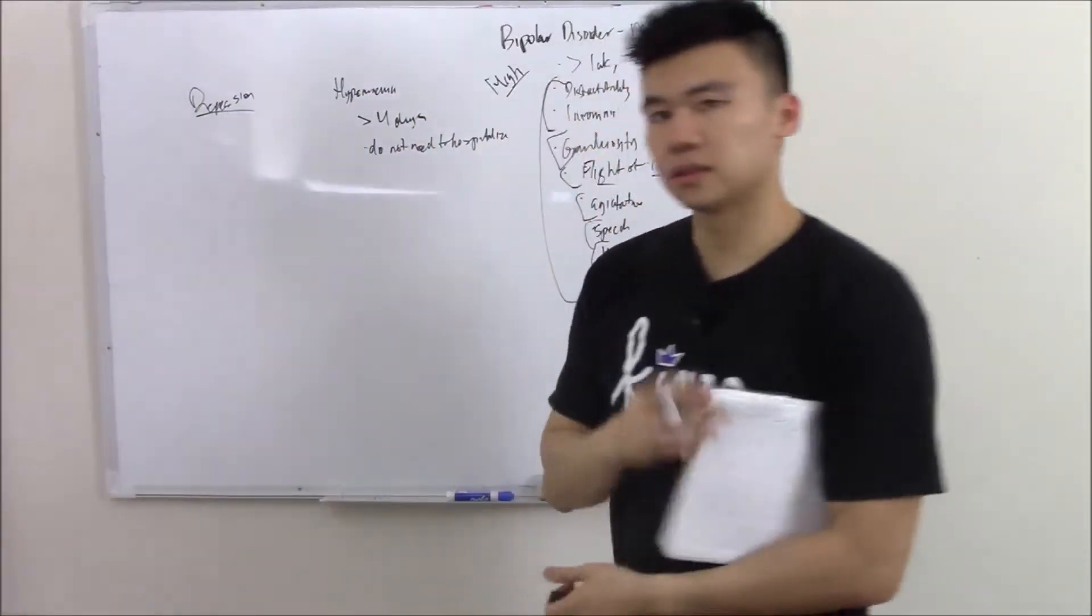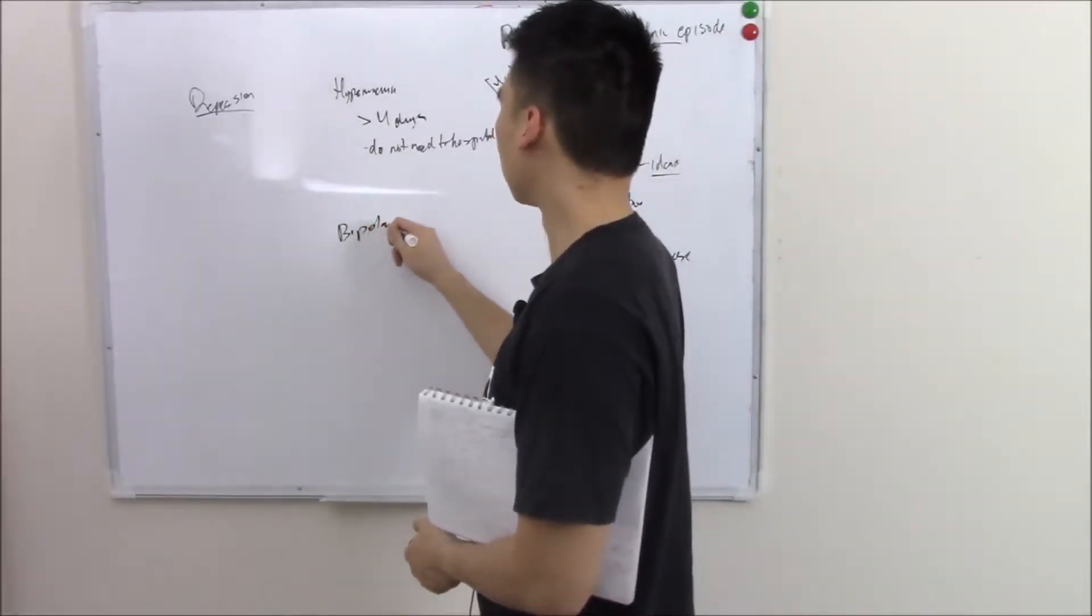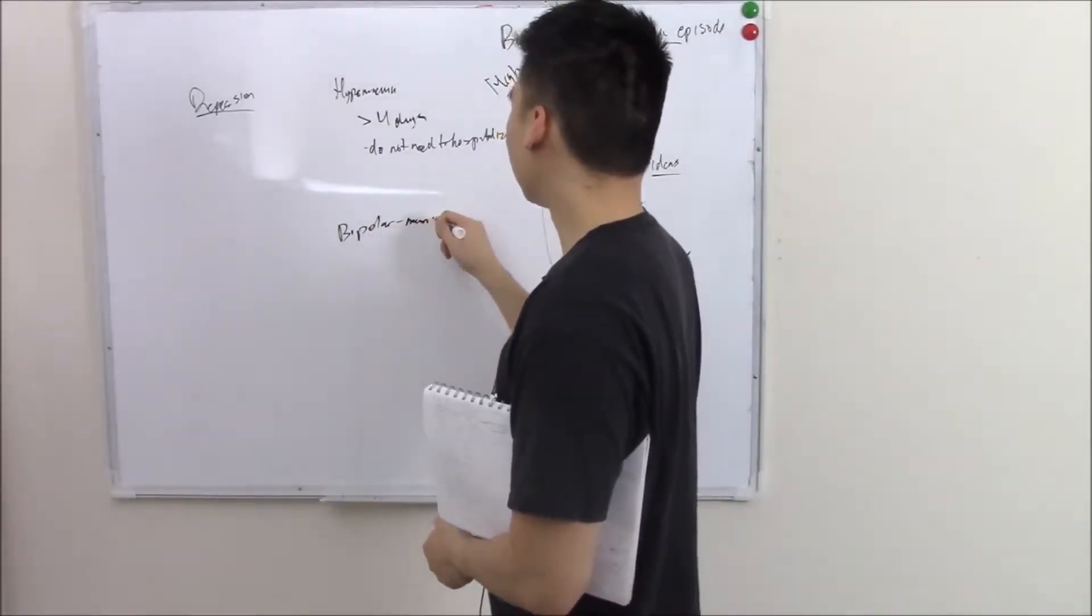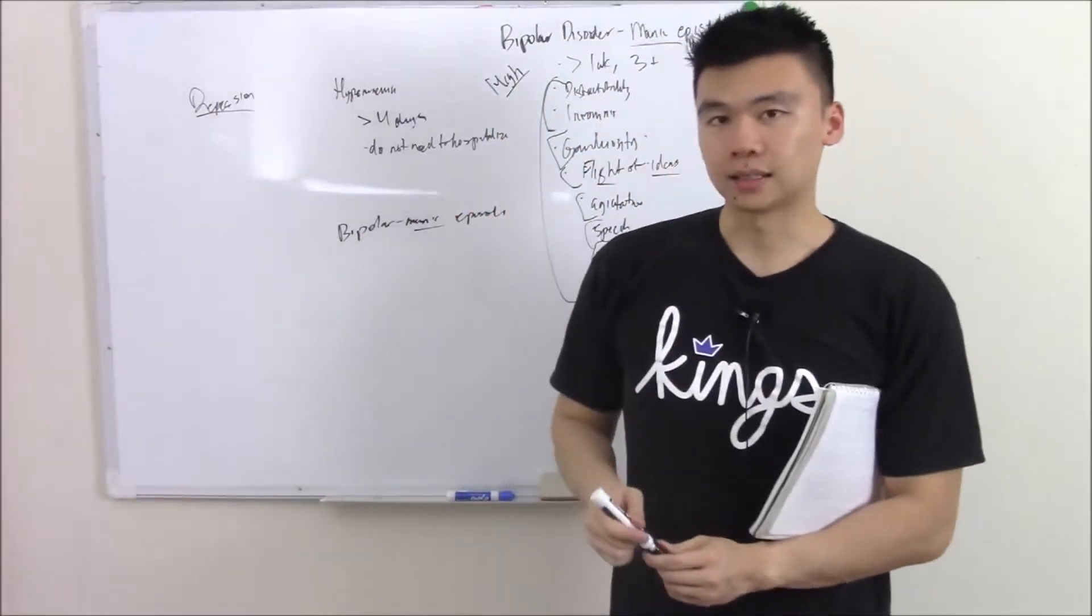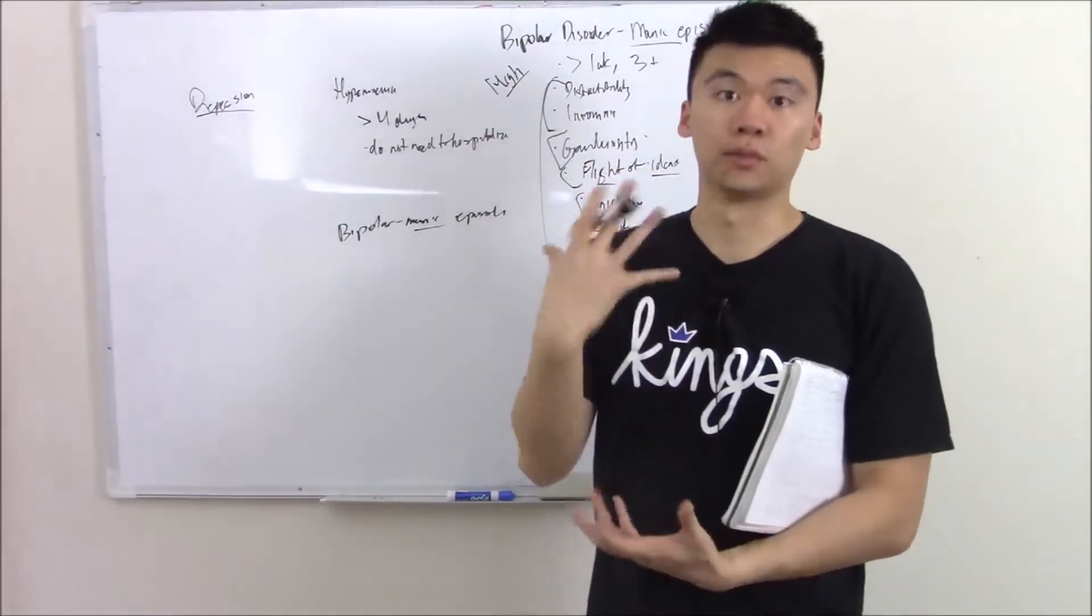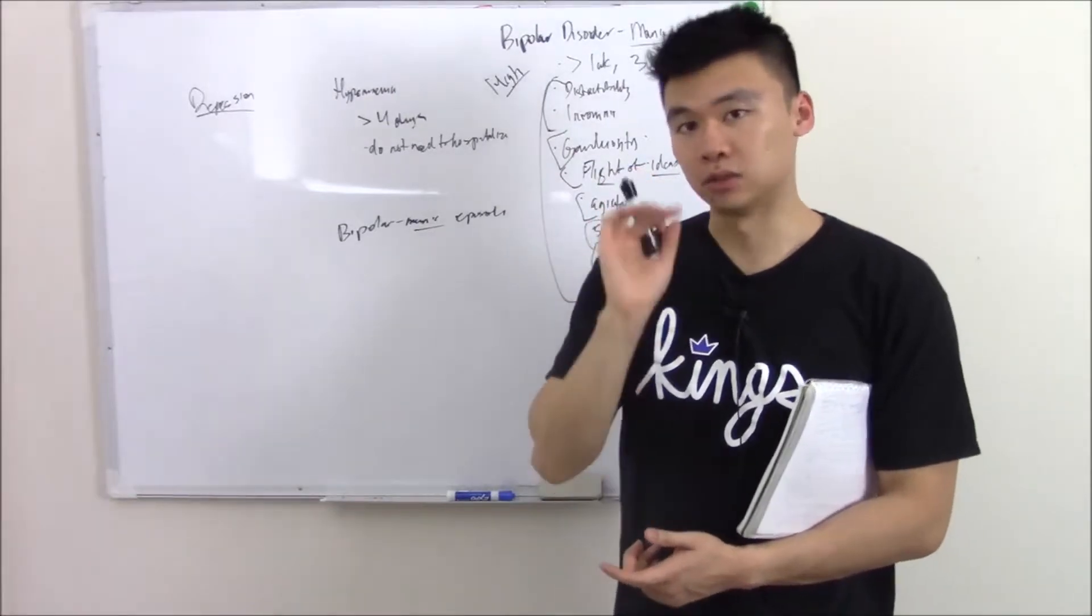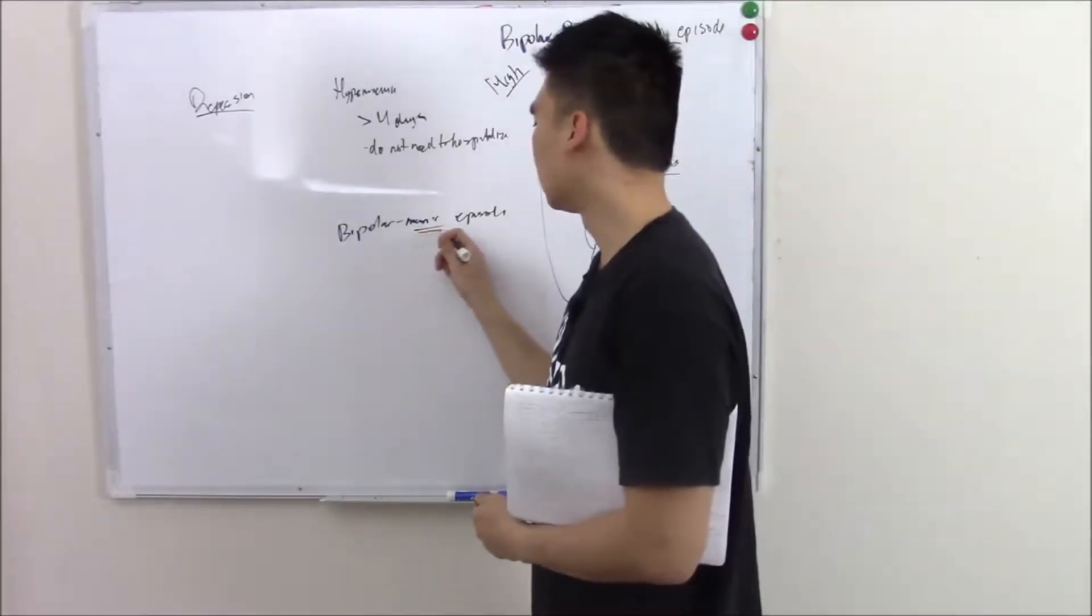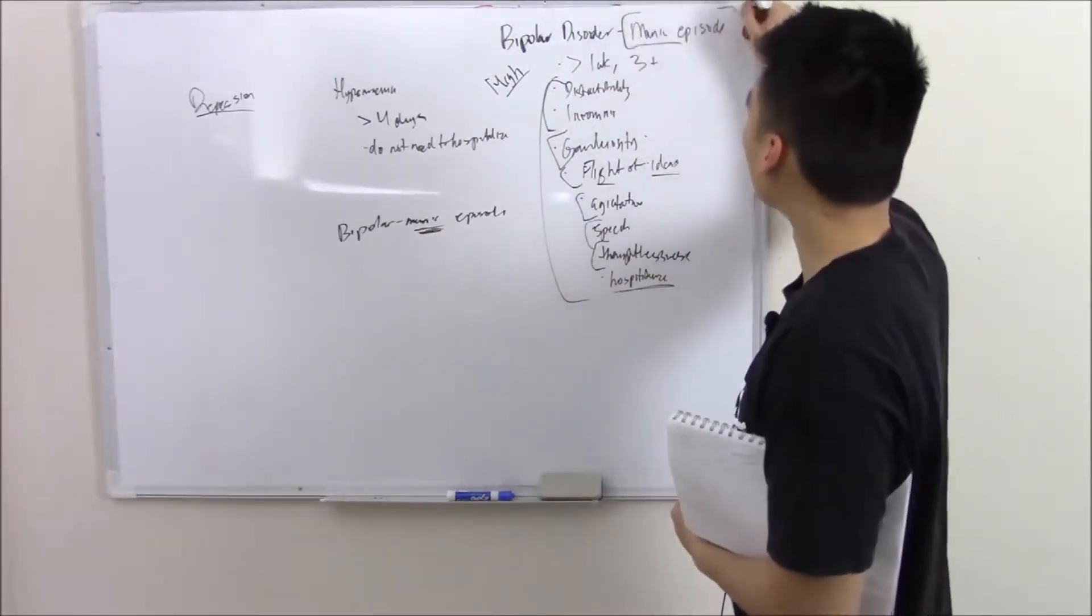So what are the types of bipolar disorder? You can have bipolar 1. Bipolar 1 is characterized by a manic episode. That is the defining feature that you must know. That is the elevation, the high. Is there a low? In about the majority of cases, there is a low, but it's not needed for diagnosis. You need to know that. All you need to make the diagnosis of bipolar disorder is that manic episode. That's why it's so important.